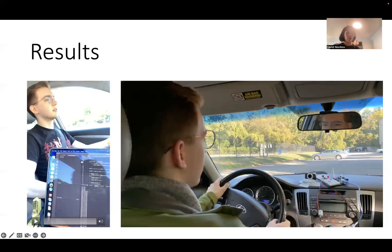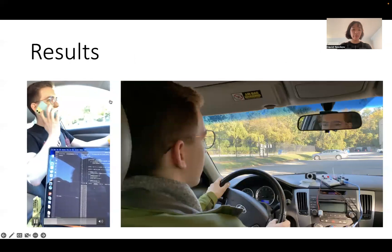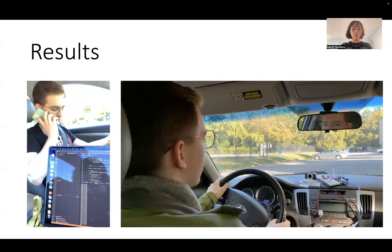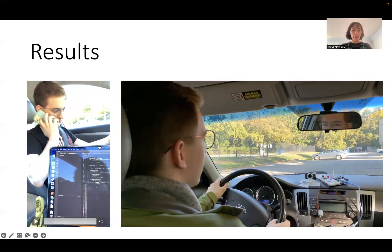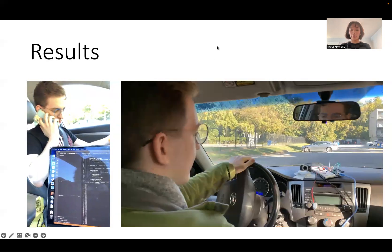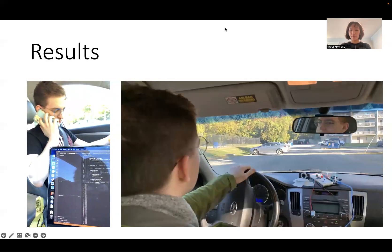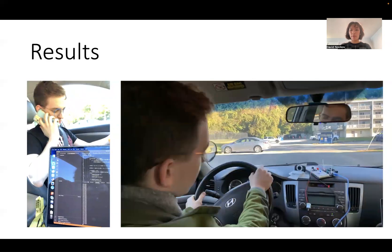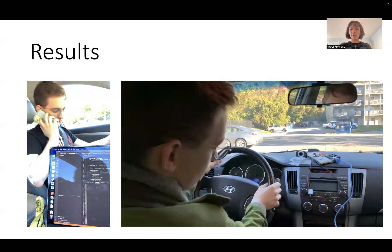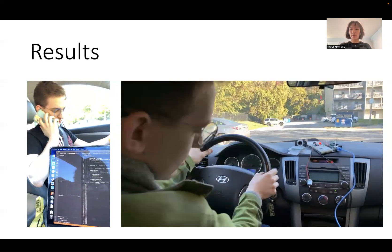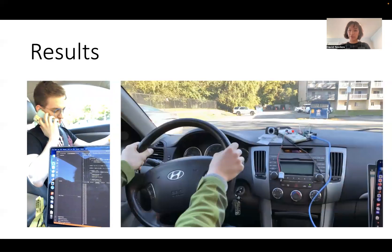These were our results. Here is a video of a good driver example — as soon as he picks up the phone, you can see it alerts the system that he's distracted. Here is another example of our hardware going off: he's driving normally, then he looks down, the red light starts going, and you can hear the motor go off.